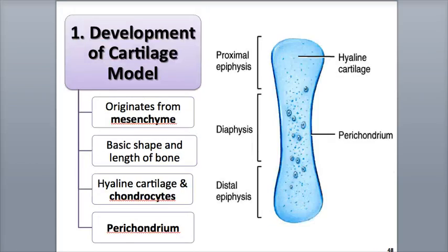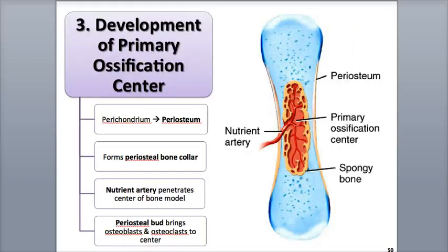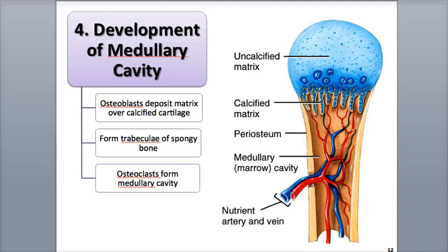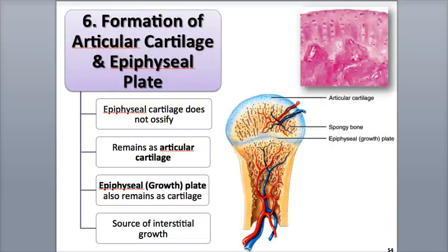The six steps are: development of the cartilage model, growth of the cartilage model, development of the primary ossification center, development of the medullary or marrow cavity, development of the secondary ossification center, and finally formation of the articular cartilage and epiphyseal plate.